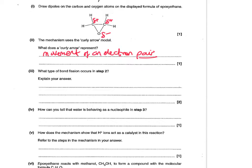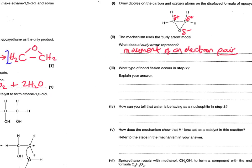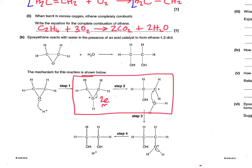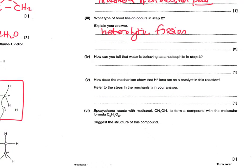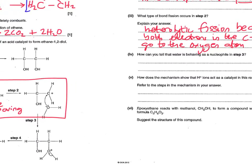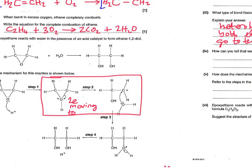The next part asks what type of bond fission occurs in step two. In step two, two electrons are moving, and because both of them are moving onto one atom, that makes it heterolytic. You have to explain your answer — it's because both electrons in the carbon-oxygen bond go to the oxygen atom.